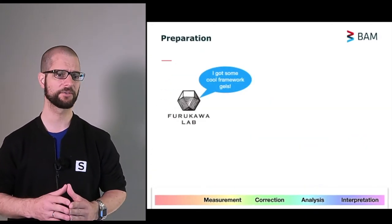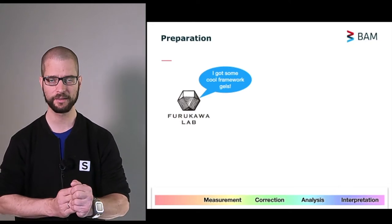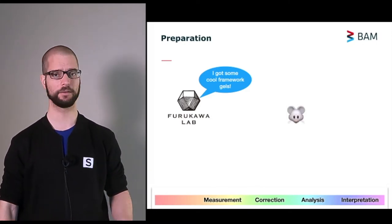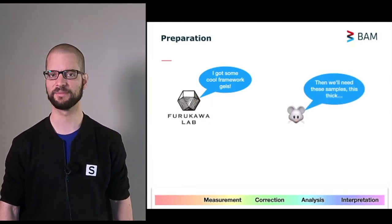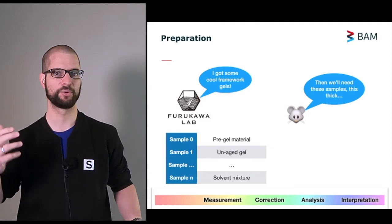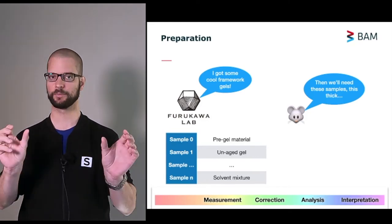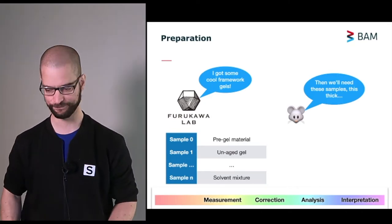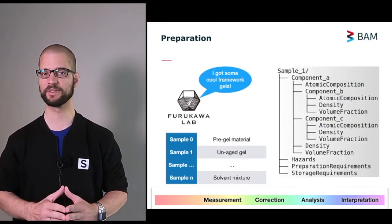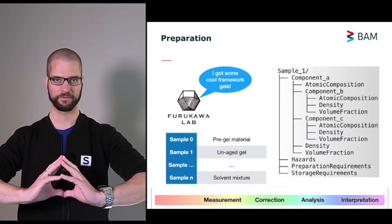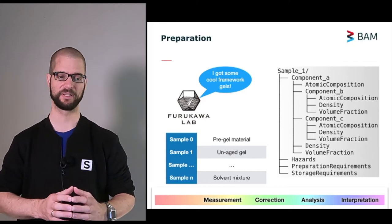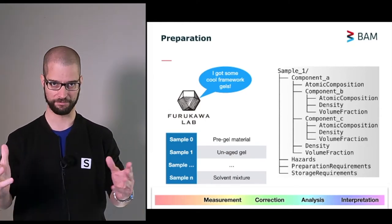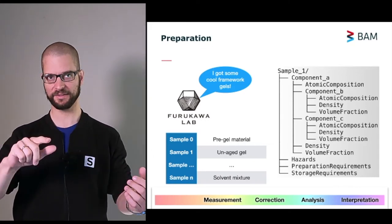For example, last year we were contacted out of the blue by the Furukawa lab from Japan, who mentioned that they had some really cool framework gels, and they would like some small angle scattering insights on those. So we said, oh, that sounds very interesting. In that case, we will need these samples, this tick, etc., etc., including things like precursors and ungelled material and all kinds of components that would allow us later on to pick apart the scattering pattern and identify individual species in there. We also asked them to fill in a sample form. These are relatively detailed sample forms in which they need to provide information on each phase in their sample. That means atomic compositions, densities, volume fractions, etc. And they actually do fill this in. We tell them, well, if you fill this in, we will be able to help you. Because this helps us with our data corrections.